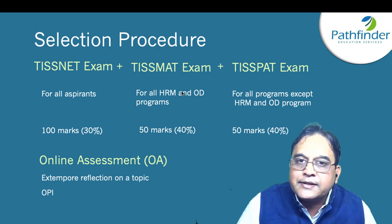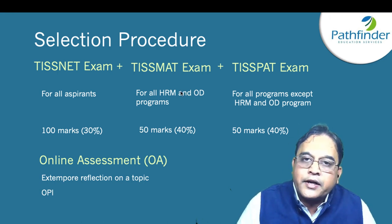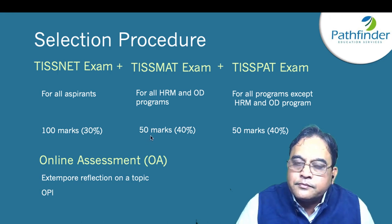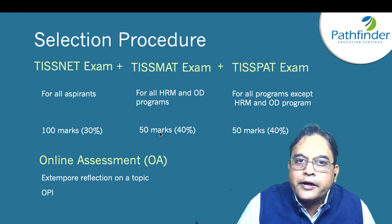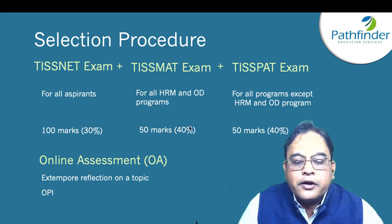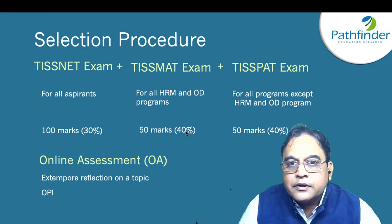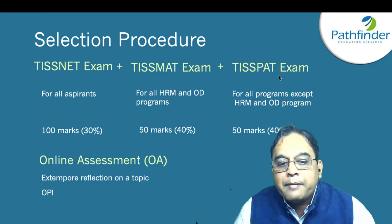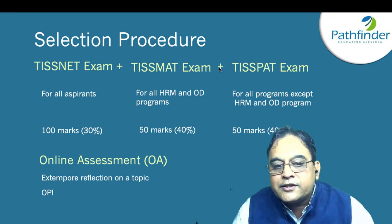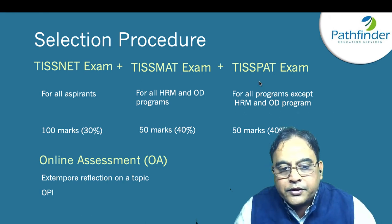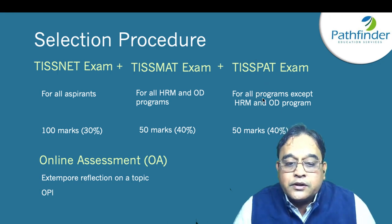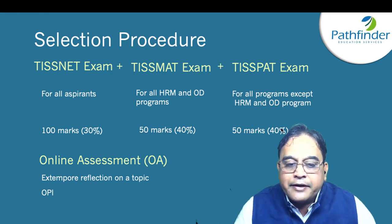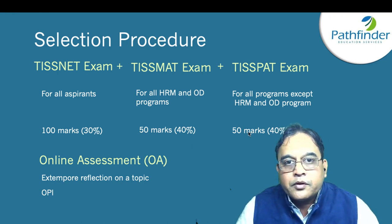The next stage is the TISMAT exam, for all applicants of HRM and ODCL (Organizational Development and Change Leadership). This exam has 50 questions and 45 minutes are allotted, with 40% weightage in the selection process. For other applicants, stage 2 is the TISPAT — Program Aptitude Test — for all programs except HR and OD. Again, 50 marks, 45 minutes, and similarly 40% weightage.